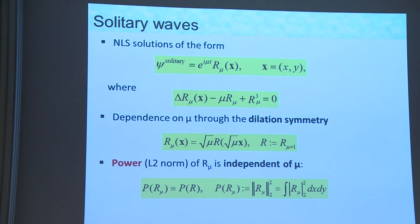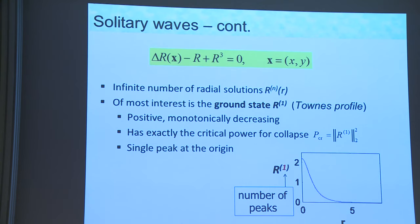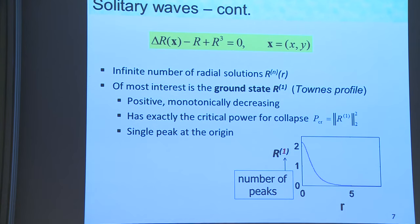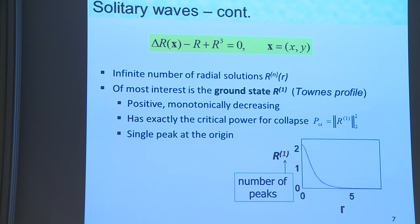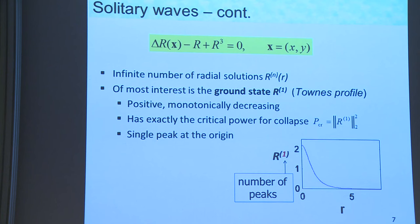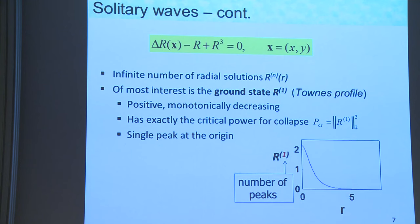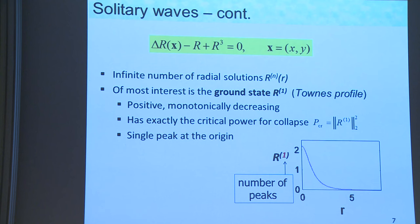The power, or the L2 norm of R_mu, is independent of this parameter. I call it power rather than L2 norm because in optics this corresponds to the power of the laser beam in watts or megawatts. The R equation has been studied extensively and has an infinite number of radial solutions. The one we usually care about is the ground state — what physicists call the Townes profile. It's positive, monotonically decreasing, has exactly the critical power for collapse, and a single peak at the origin. I call it R^1 because the superscript denotes the number of peaks.